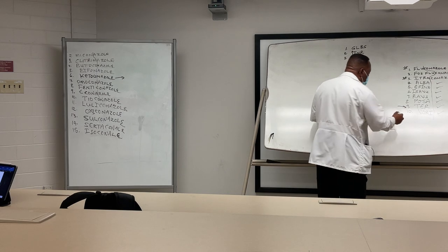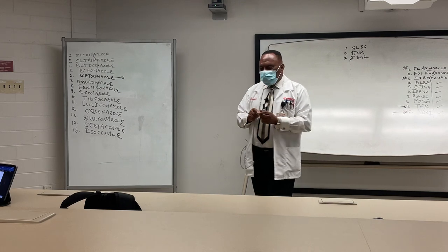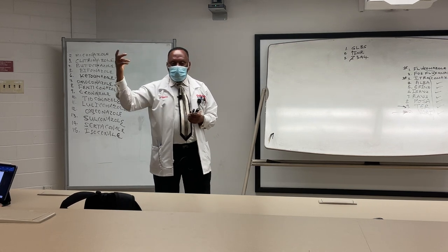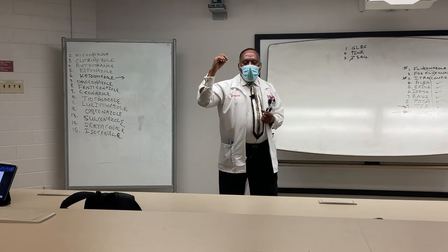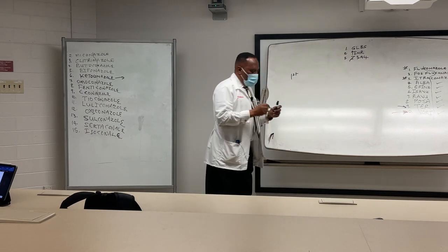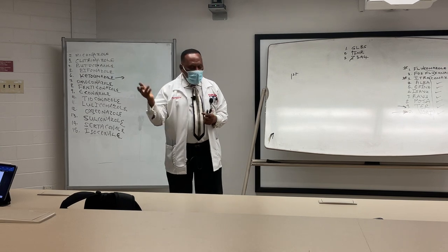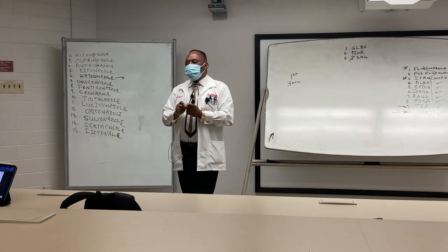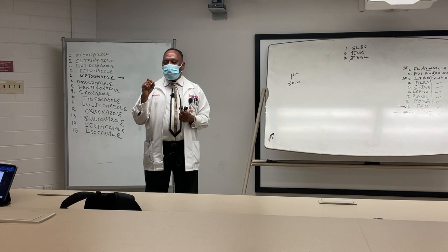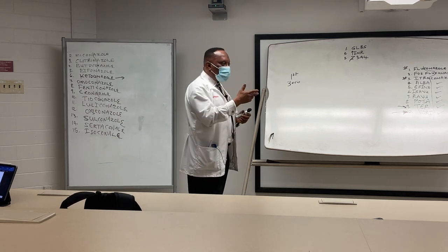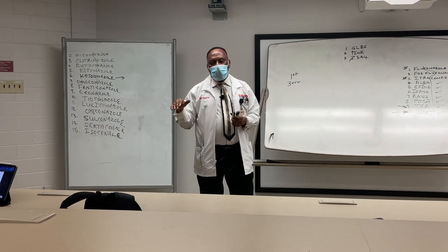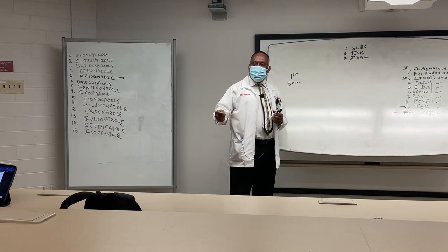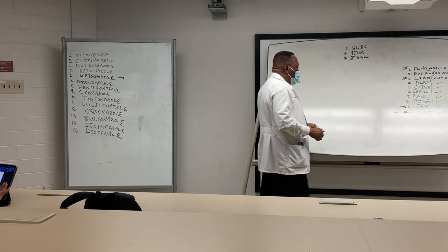Voriconazole can produce sudden toxicity even at a normal dose, for two reasons. One, the drug can start off undergoing first-order kinetics and then switch to zero-order kinetics. Zero-order kinetics causes drug accumulation in the bloodstream, which is why you can get sudden toxicity. This is the same phenomenon seen with phenytoin (Dilantin).